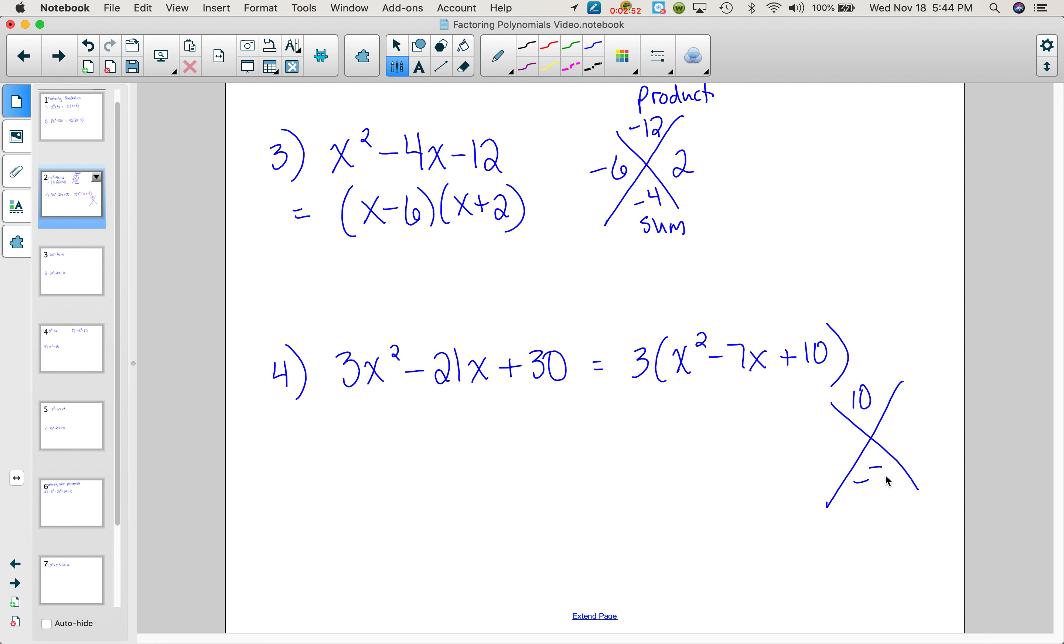So our product is 10, our sum negative 7. So to have a negative sum and a positive product means both numbers are negative. So negative 5 and negative 2, I don't need a box because it's just an x squared. The 3 is one of the factors. And then we have x minus 5, x minus 2. Remember the order wouldn't matter. It could be x minus 2 and x minus 5. That part wouldn't make a difference.